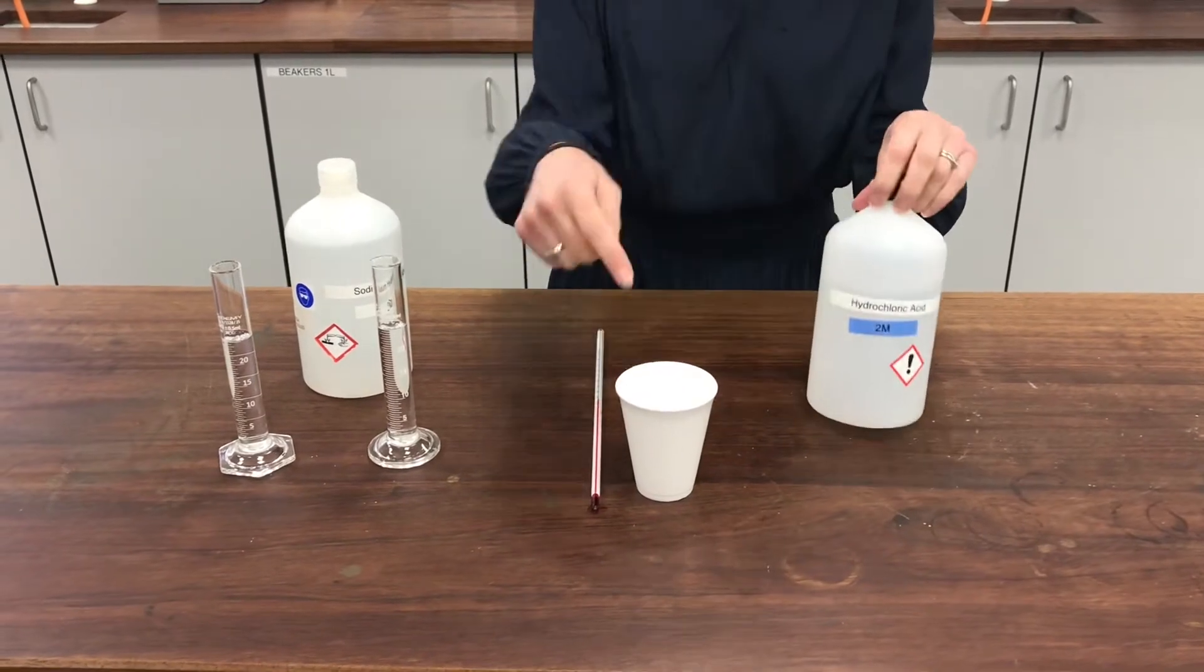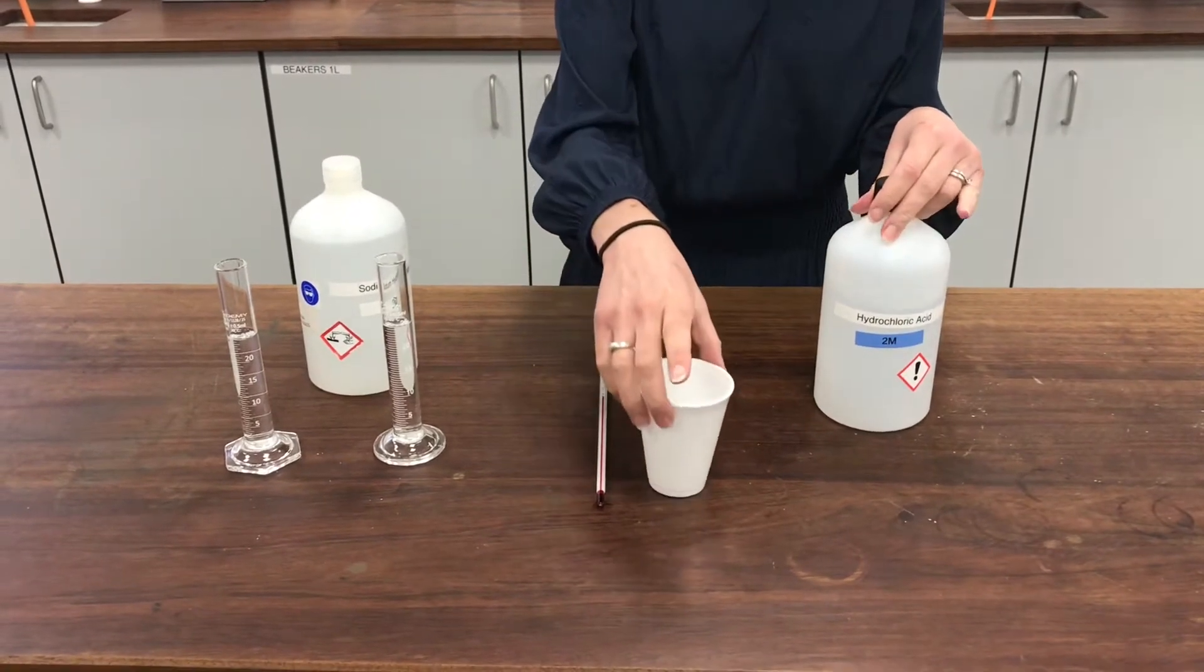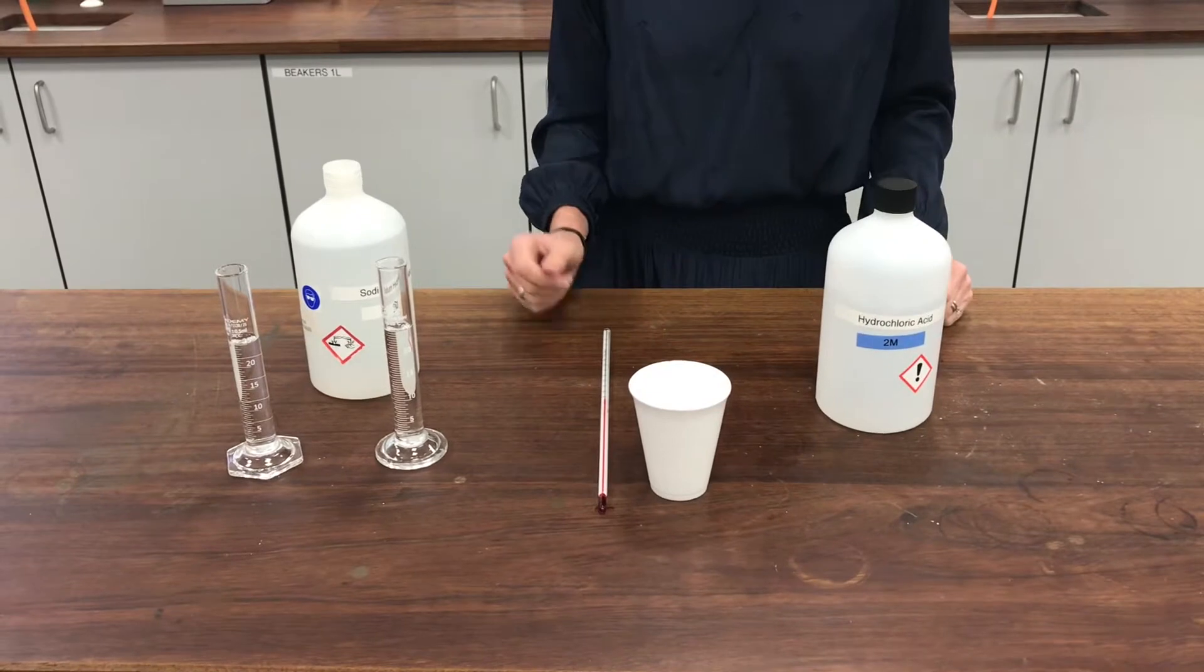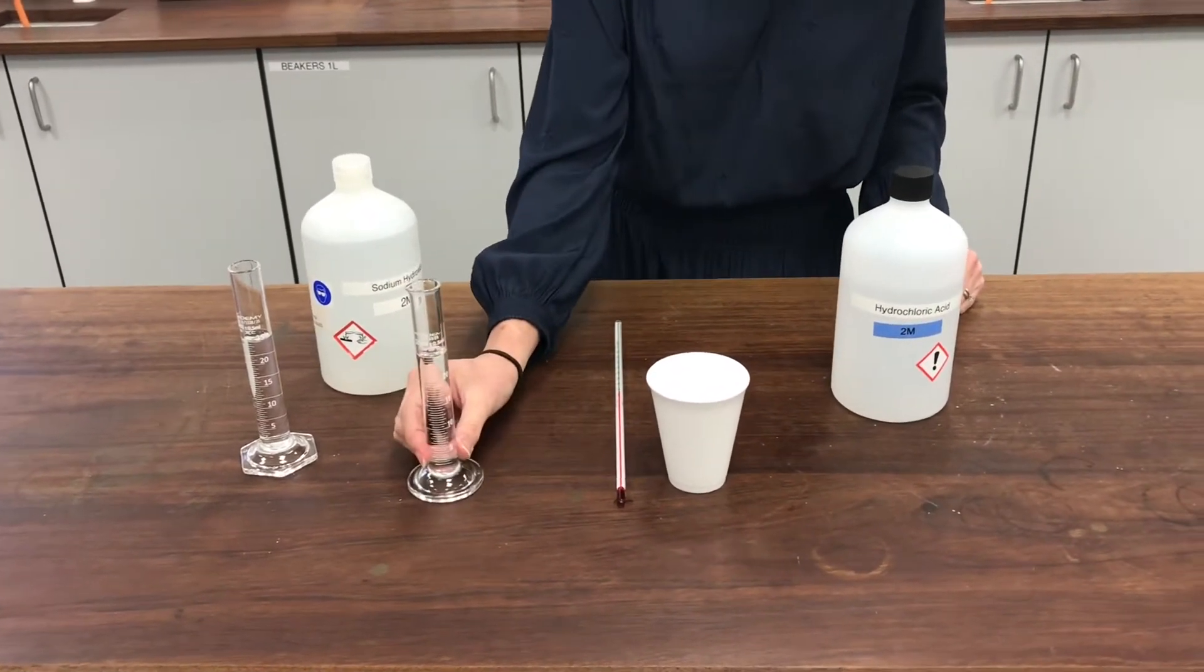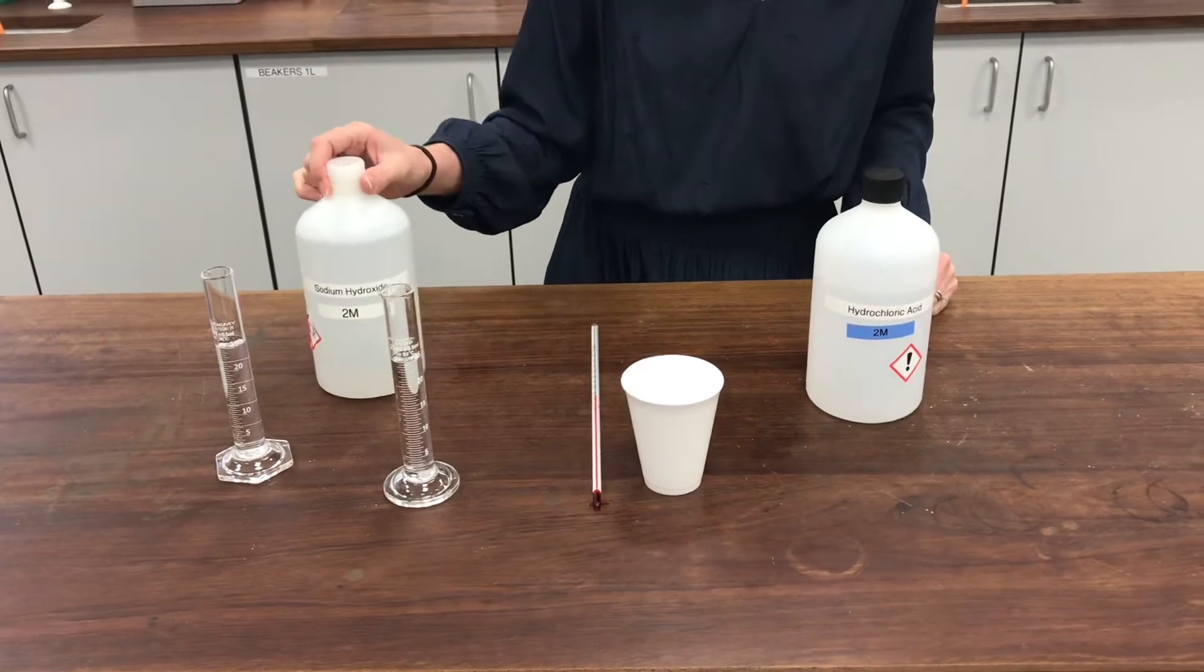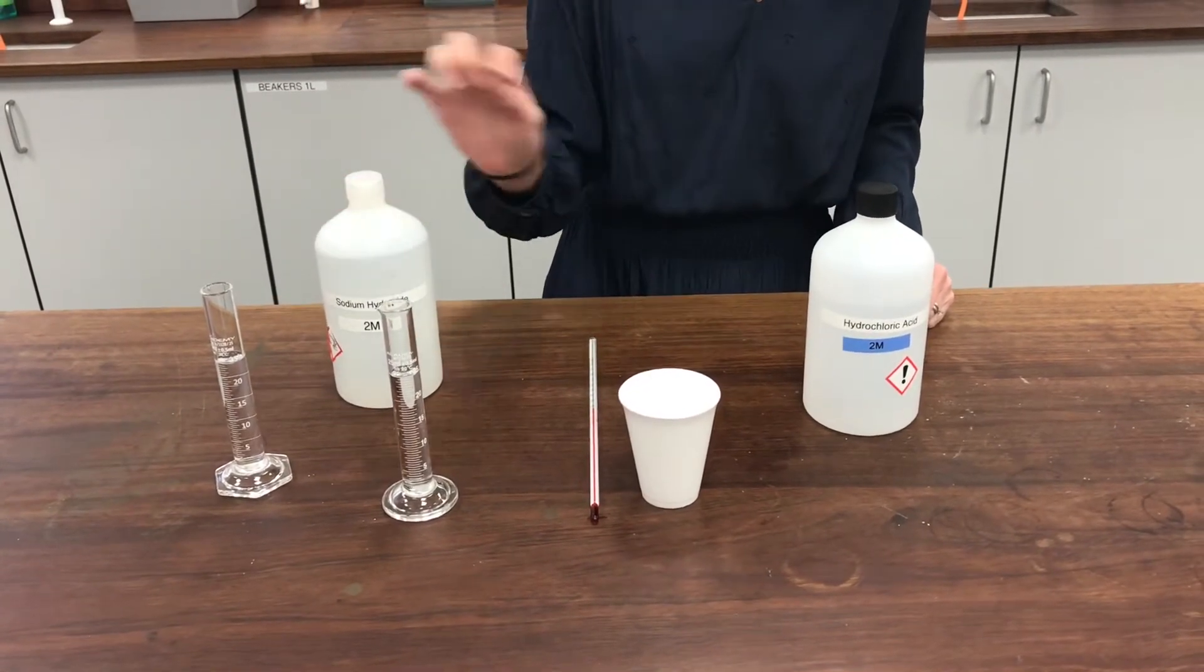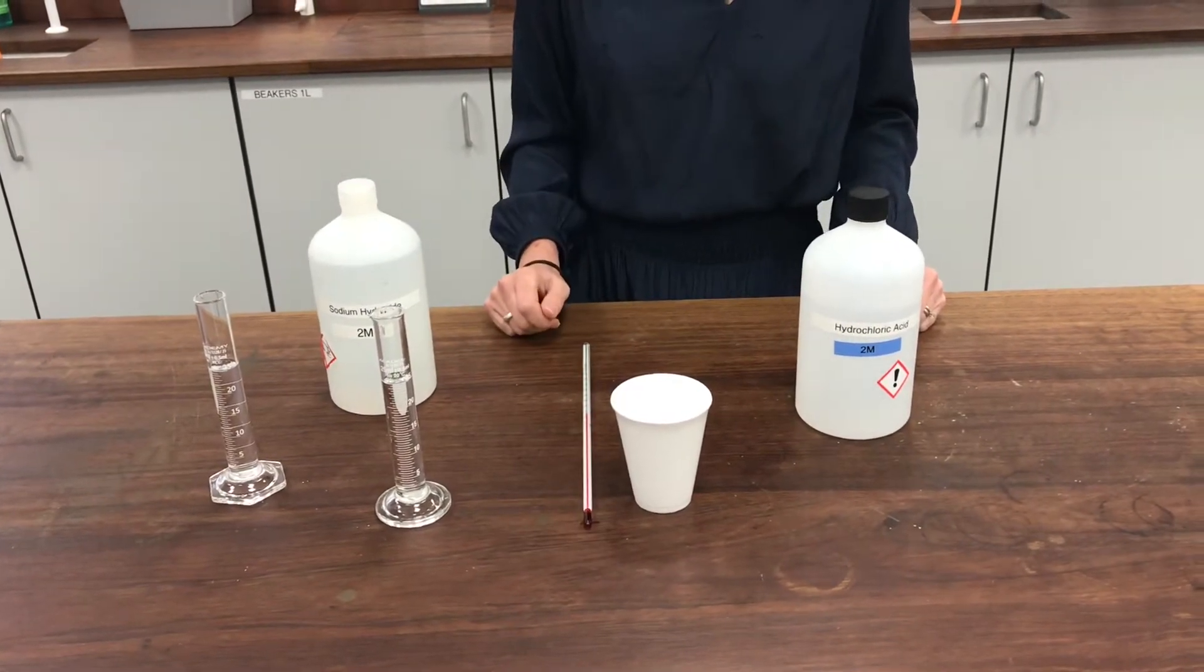So I've got some hydrochloric acid already in my polystyrene cup here. I've put 25 millilitres in and I'm going to take the temperature of it, the starting temperature, and then I'm going to add 25 millilitres of sodium hydroxide. This is an alkali and it should neutralise the acid that's in my polystyrene cup.